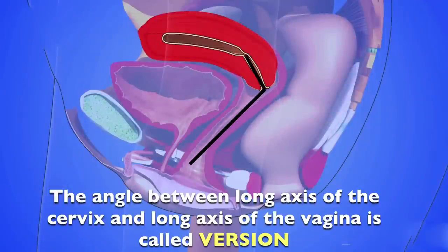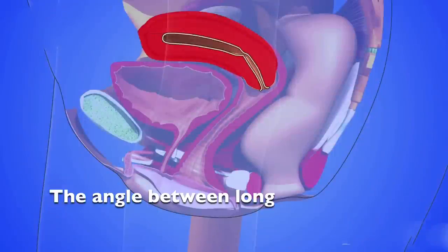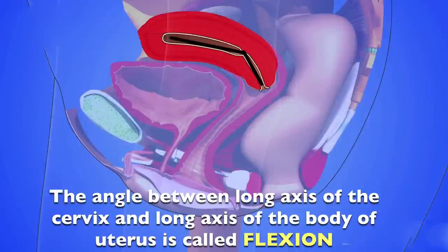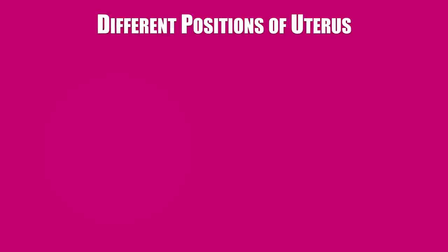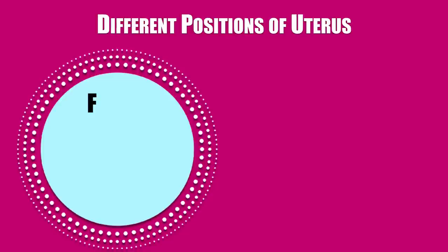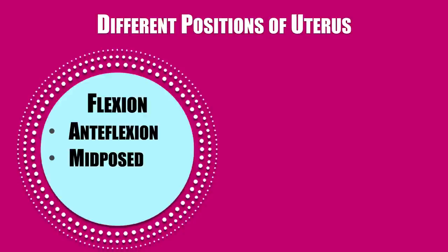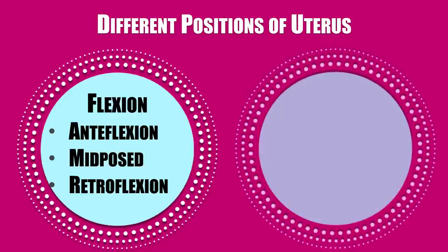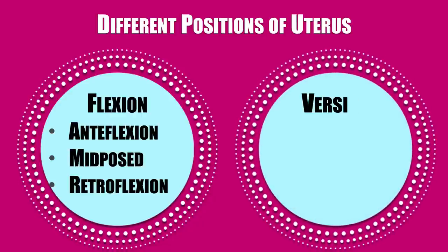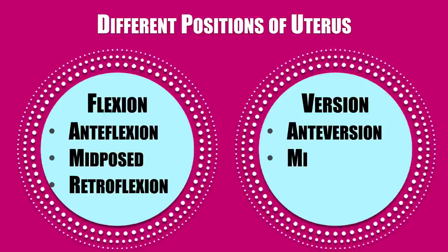Version is defined as the angle between the long axis of the cervix and the long axis of the vagina. On the other hand, the angle between the long axis of the cervix and the long axis of the body of the uterus is defined as flexion. Based on these definitions, there are three flexion positions: antiflexion, mid-post position and retroflexion, and three version positions: anteversion, mid-post and retroversion.